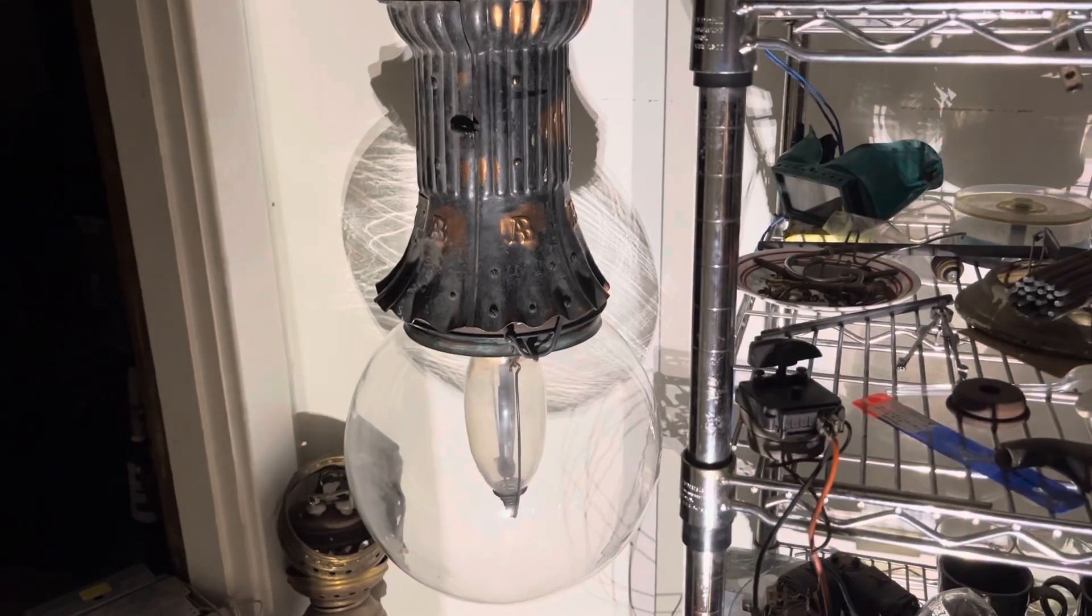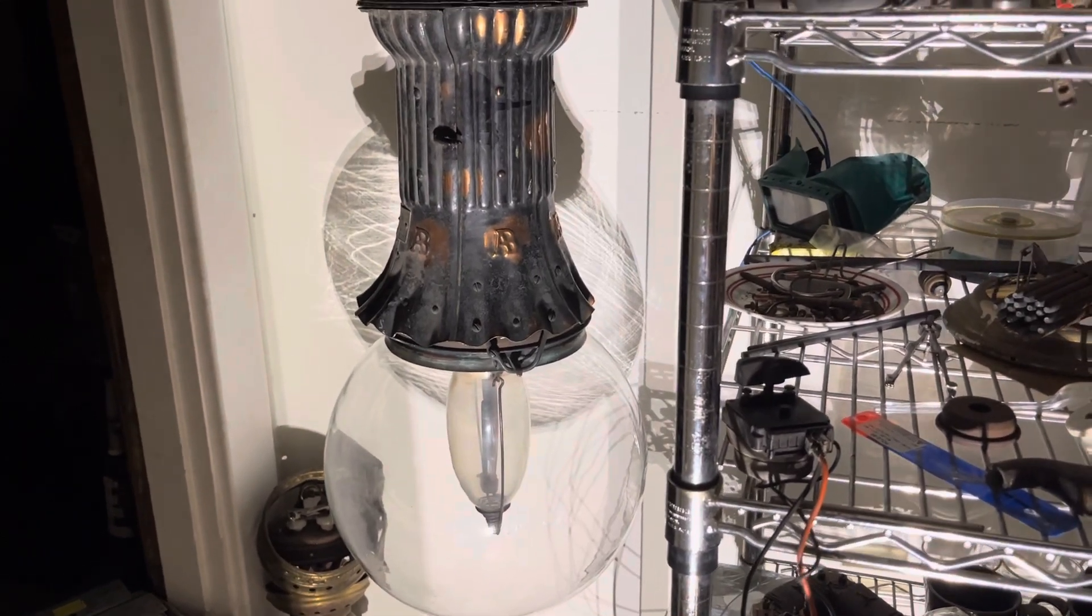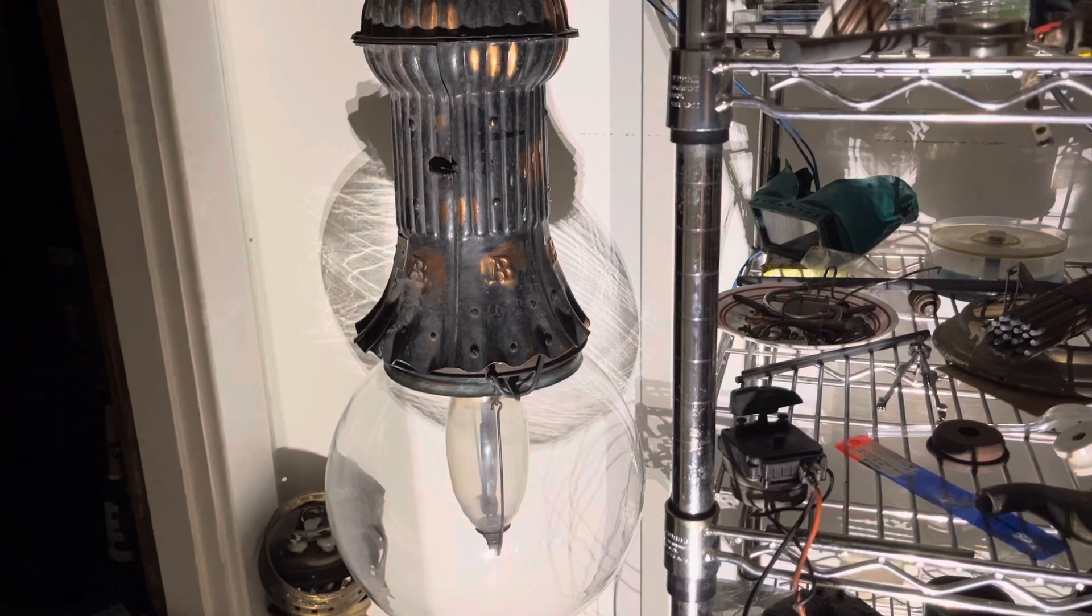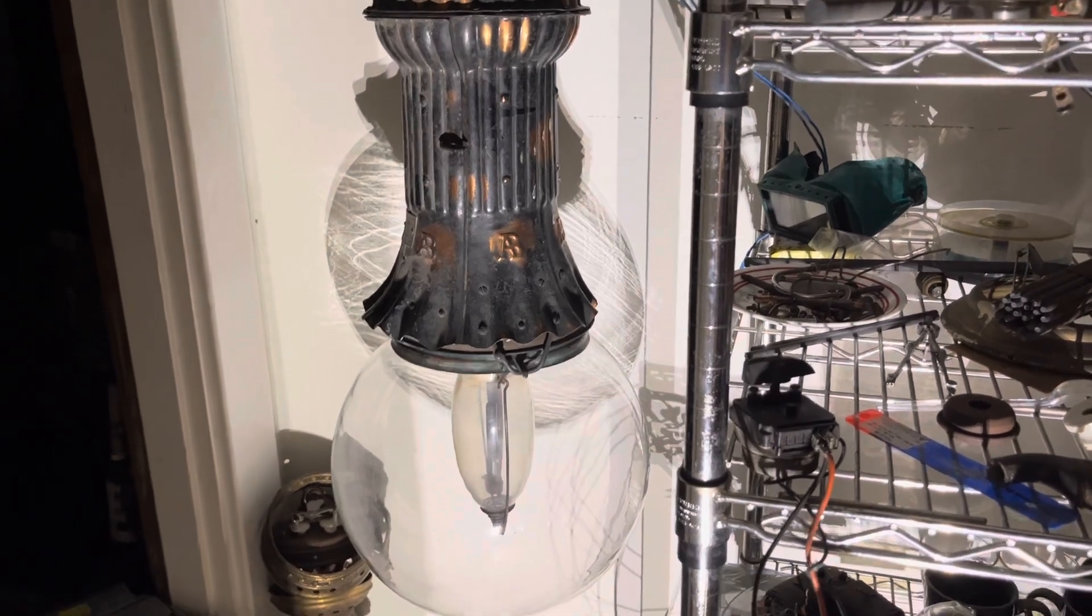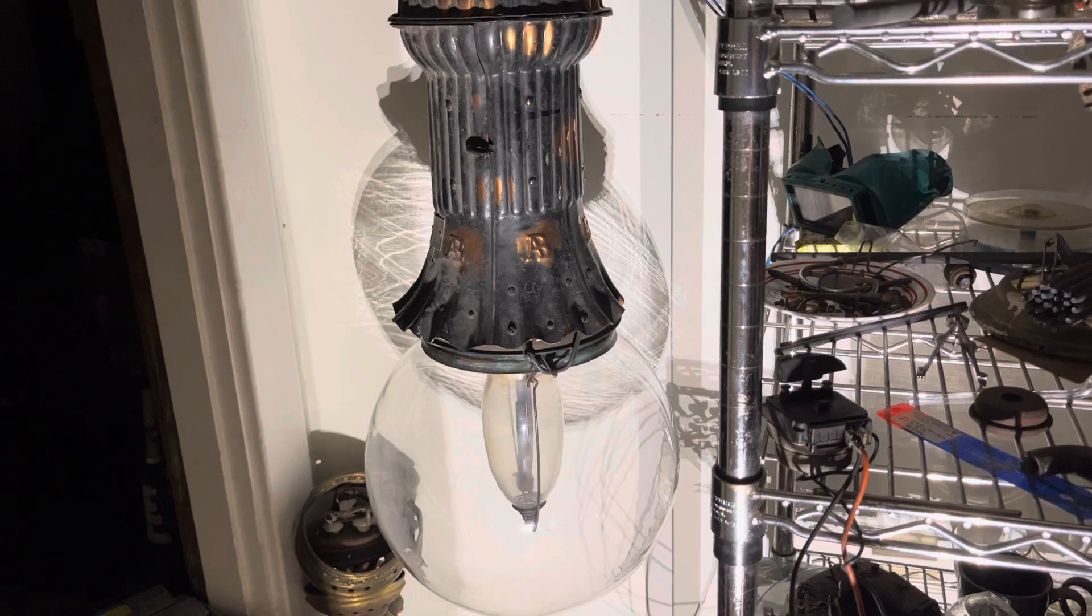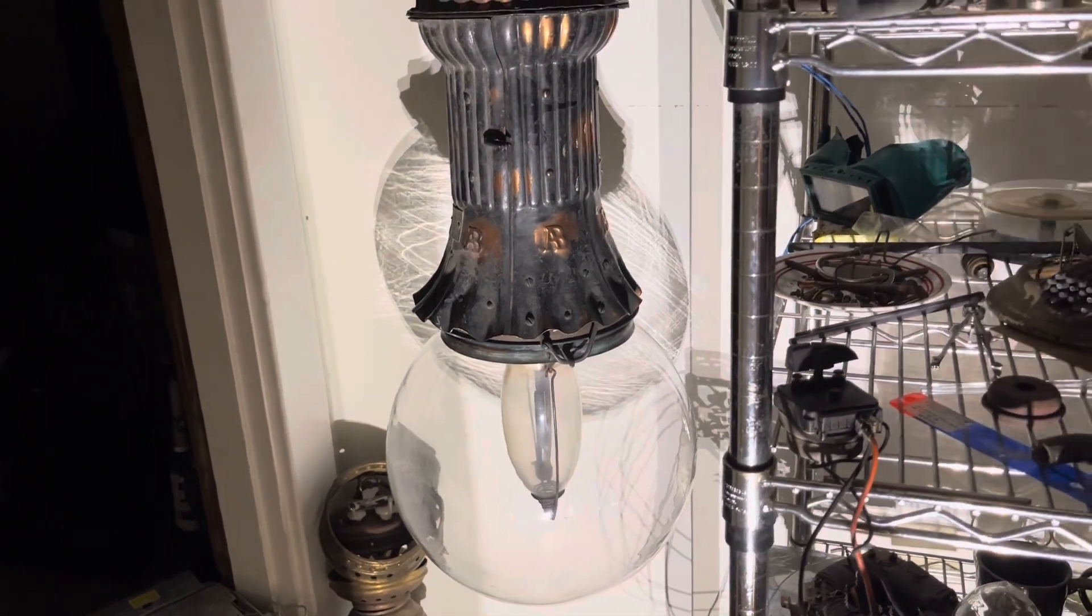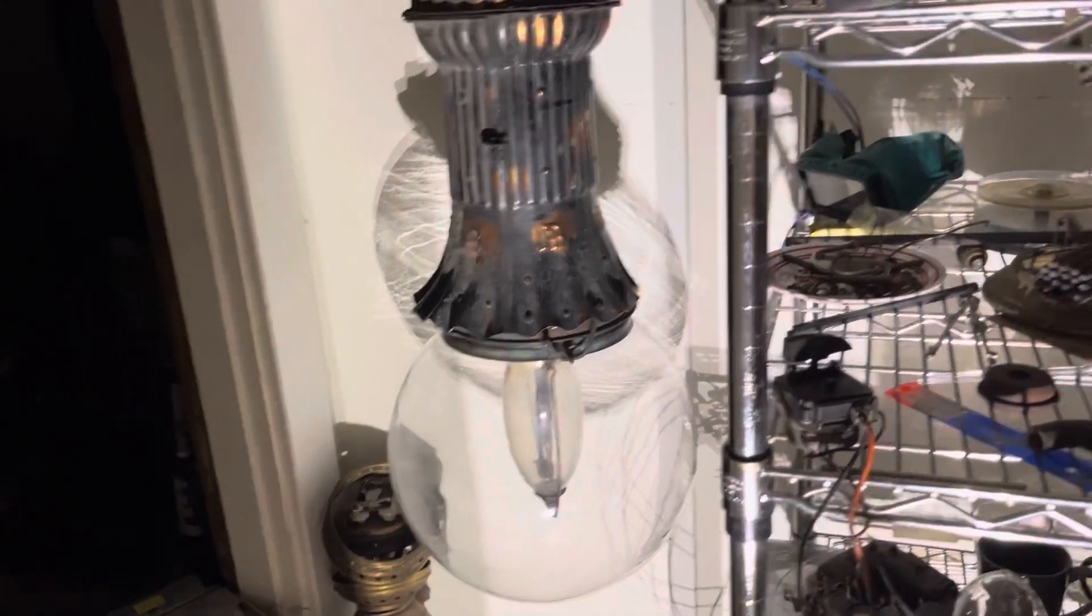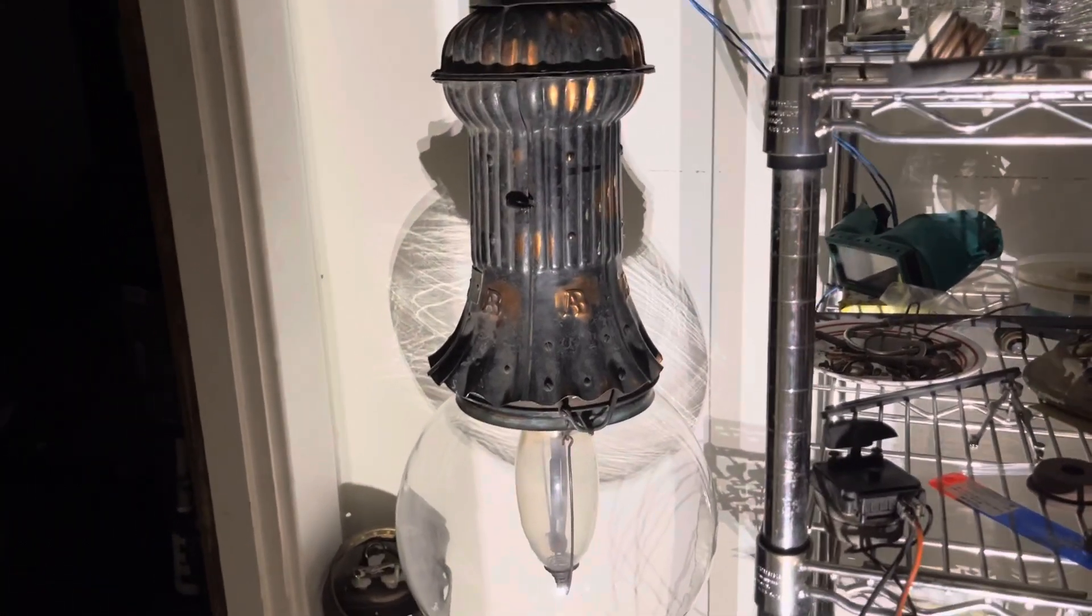Arc lamps were designed for high frequency circuits such as 133 hertz, 166, and 233 because 60 hertz was just not suitable to run these things. It chatters, it hammers the carbons, and power companies had separate circuits devoted to arc lamps that were very high frequency alternating current.